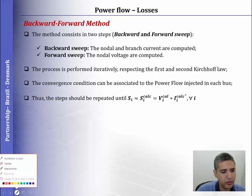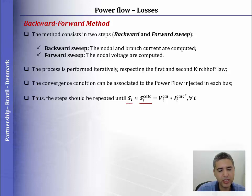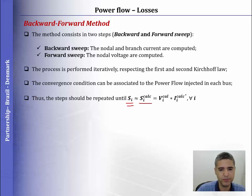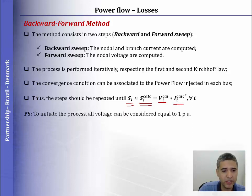The process will be repeated until S, which is the power injected in each bus, equals or approximately equals the value of the actual power in each bus of the system. And how can we compute S, the power injected in each bus? By multiplying the voltage computed for each bus by the conjugated current in each bus of the system.